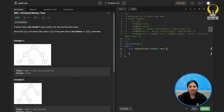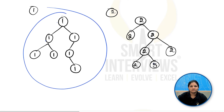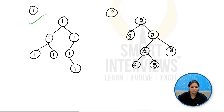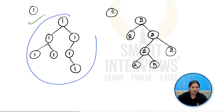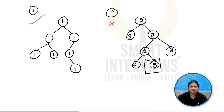So what is a univalued tree? A univalued tree is a tree in which each and every node contains the same value. I gave you two examples — can you tell me if the first one is univalued? Yes, because each and every node has the same value, that is one. What about the second one? Definitely no, because all the nodes have value two except one node which has value five. So it is not a univalued tree.